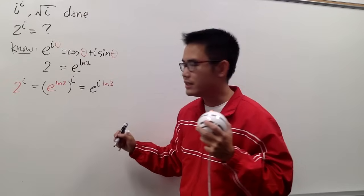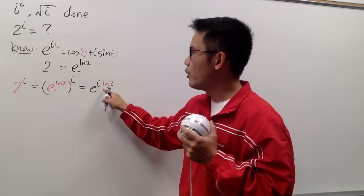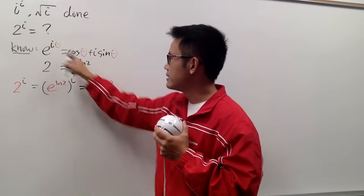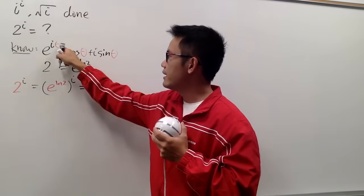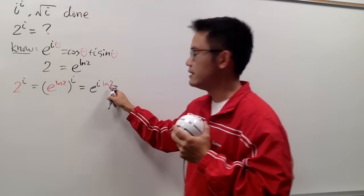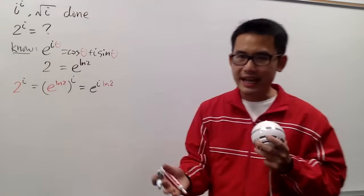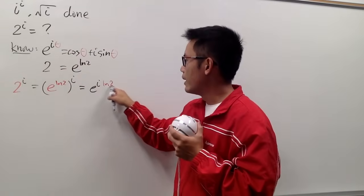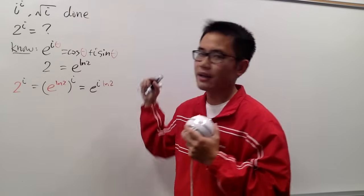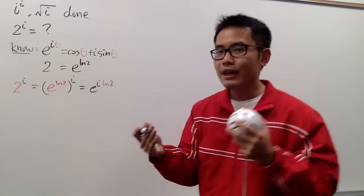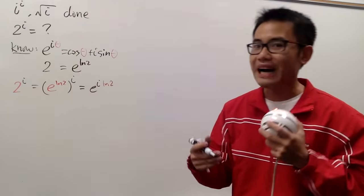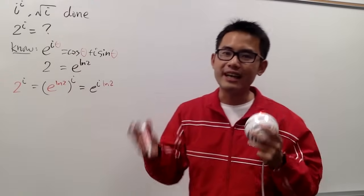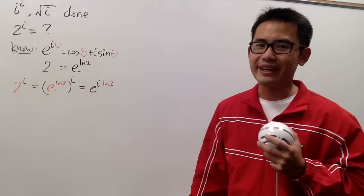So now we will have e for the base, i for the power, multiplying with ln 2. And as you can see, we got the formula matched: we have e for the base, i is the i, and theta is ln 2. In other words, we can just plug in ln 2 into the theta. Even though we don't have pi around, ln 2 is just as cool.